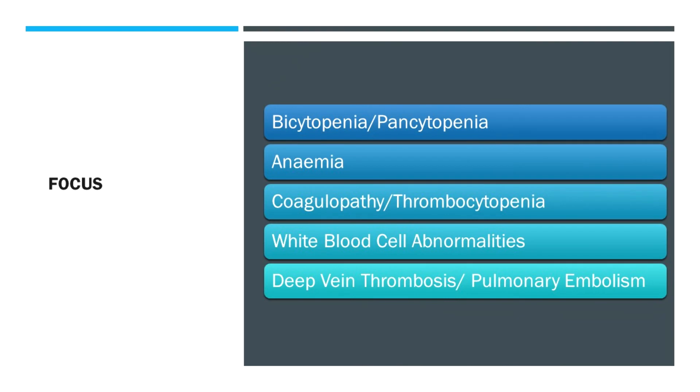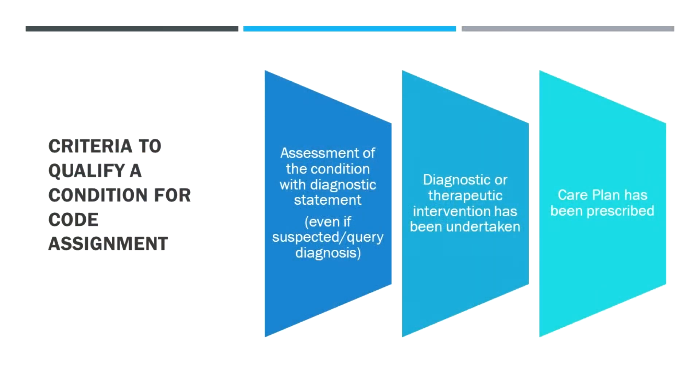In terms of anaemia, there's a lot of crossover with surgery and other areas of medicine. Coagulopathy or thrombocytopenia issues is another area we'll look at, and then white cell abnormalities and how they can be coded, finishing on venous thromboembolism — in particular DVT and PE. To qualify for coding criteria, you need a diagnostic statement that incorporates the diagnosis, documented somewhere in the notes — whether at admission, during a ward round, a consult note, or ideally in the discharge summary. There needs to be an intervention, whether just a blood test, physical examination, or an invasive investigation, that confirms or adds evidence to the diagnosis, and then some kind of management plan.